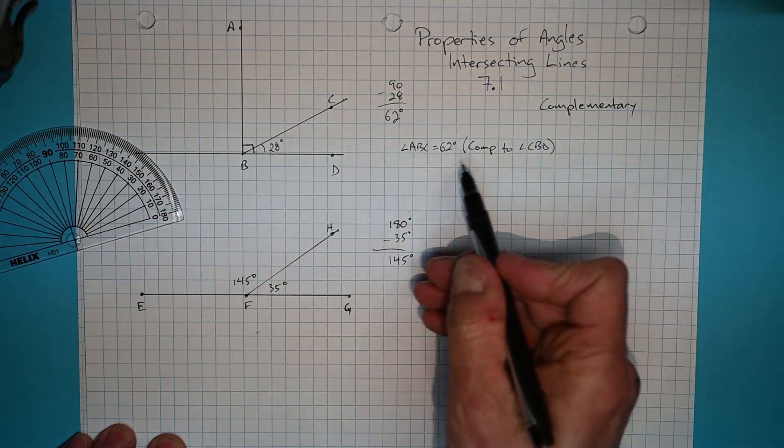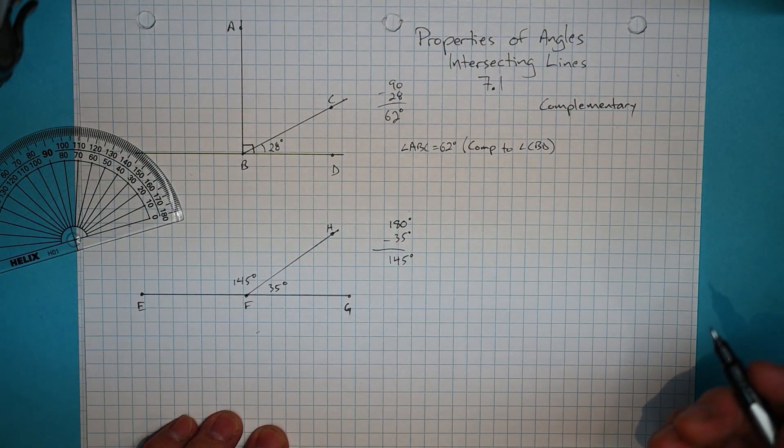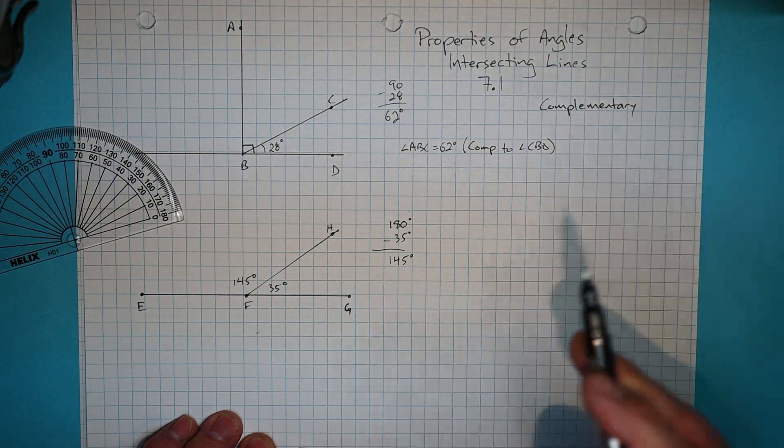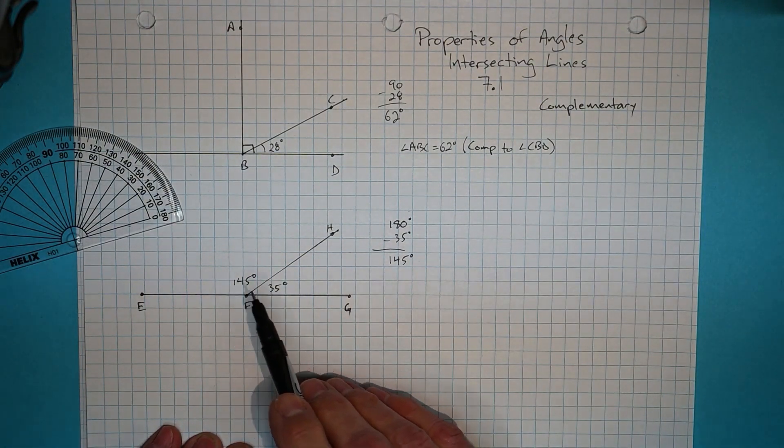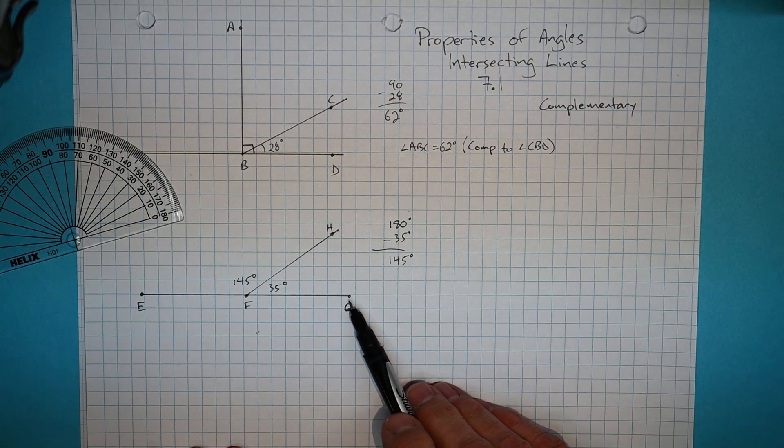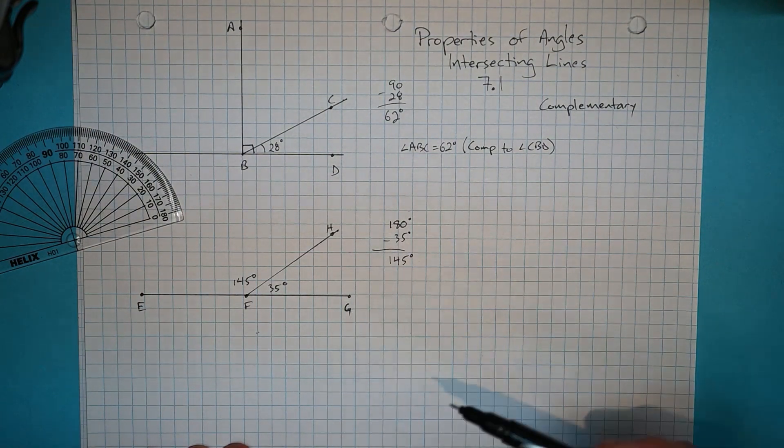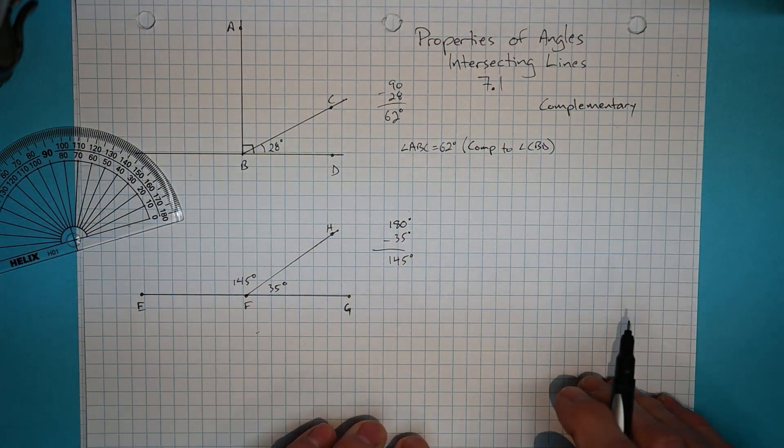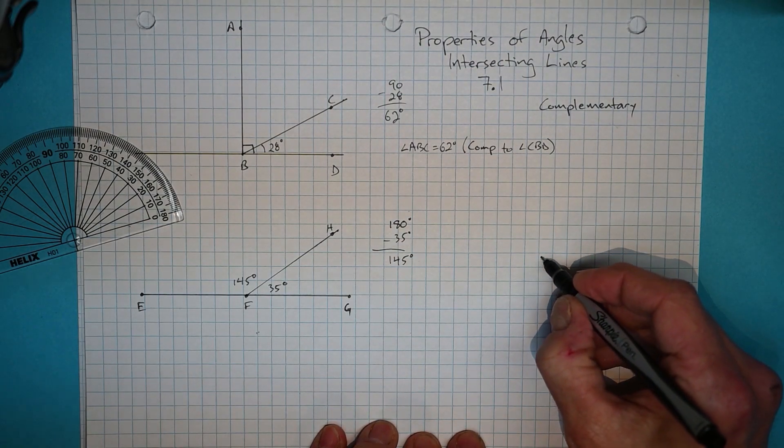Again, to just show our math thinking, oh, I should mention, by the way, that when two angles add up to 180 degrees, they have a slightly different name. Instead of being complementary, they are supplementary. Supplementary. Again, with that E in the name. Supplementary.